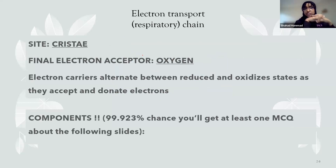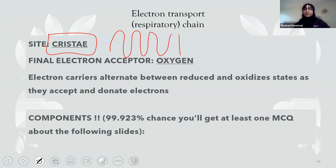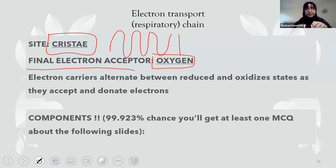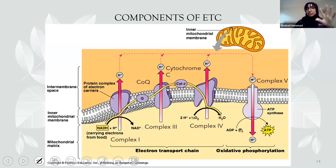Now for the electron transport chain. The electron transport chain, or oxidative phosphorylation, happens in the mitochondria — specifically in the cristae, which are the folds of the inner mitochondrial membrane. They're folded to increase surface area. Another key thing to know: the final electron acceptor is oxygen. And as a brief overview, electron carriers alternate between reduced and oxidized states, accepting and donating electrons.